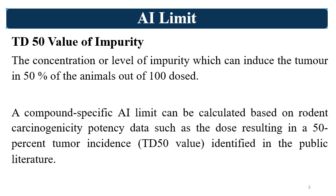The second key terminology in this video is the TD50 value. TD50 is the concentration or level of an impurity which can induce tumour in 50% of the population out of the total population. For example, if you have taken 100 animals in a carcinogenicity study, you find the chronic dose of the impurity which induces tumour in 50 of those 100 animals — that dose is the TD50 value.